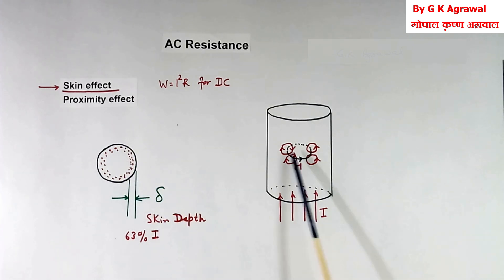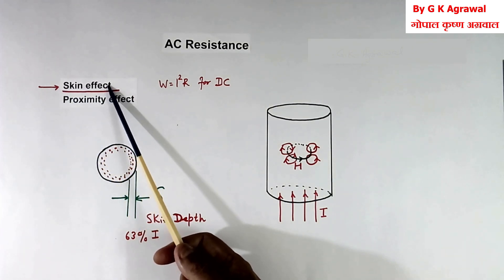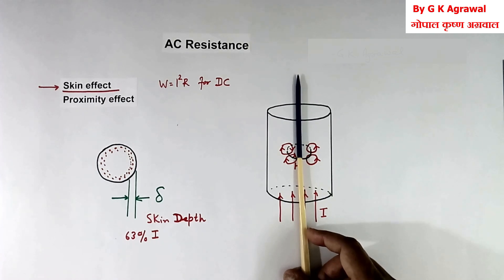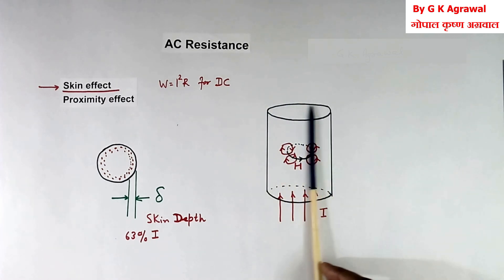Here we will learn skin effect. Suppose this is wire, in that current is flowing. So because of current, magnetic field will be created here around this wire.